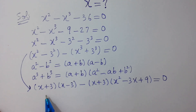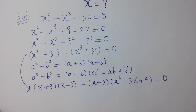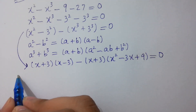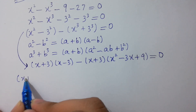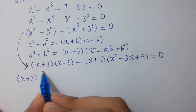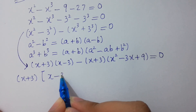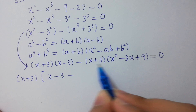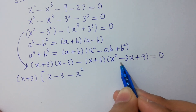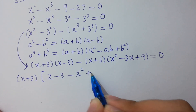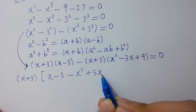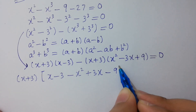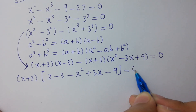Here (x+3) and (x+3) are common factors, so (x+3) is factored out. This gives: (x+3) times [(x−3) minus (x squared minus 3x plus 9)] equals 0, which simplifies inside the bracket with sign distribution.